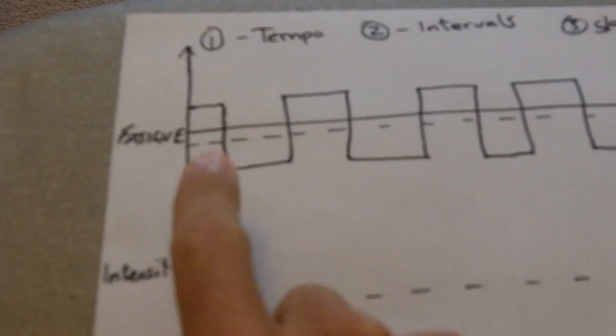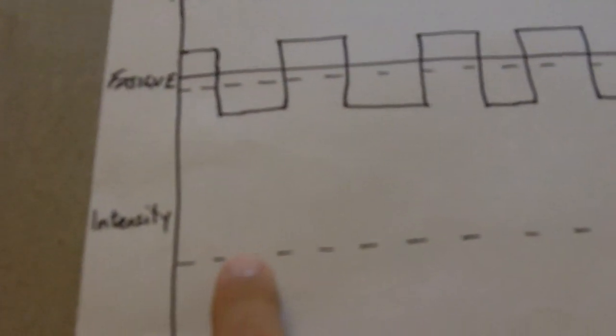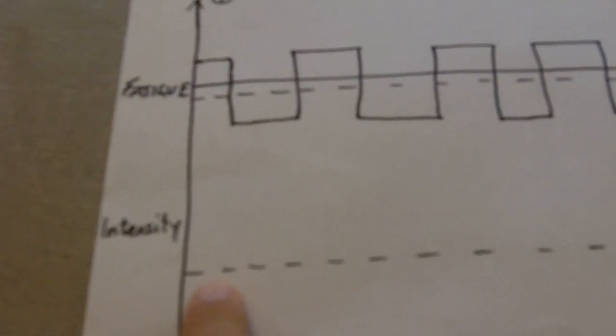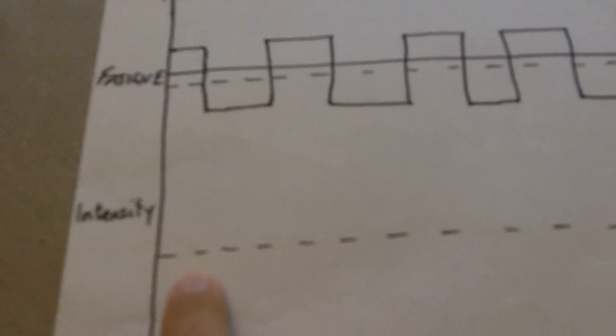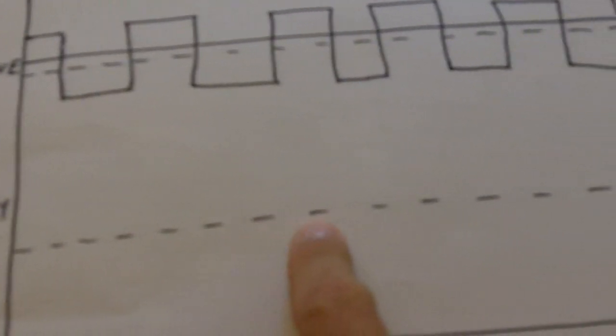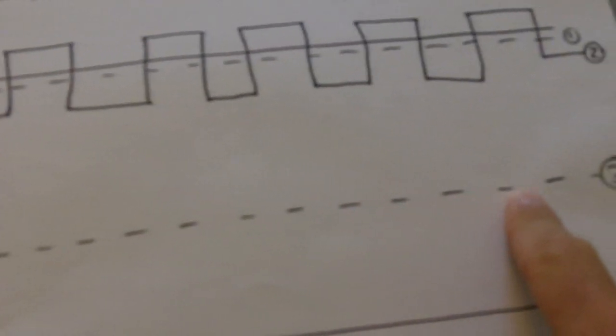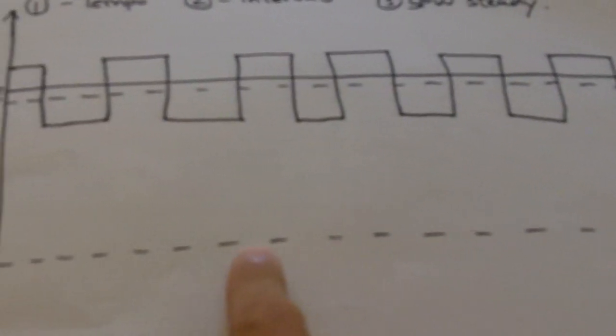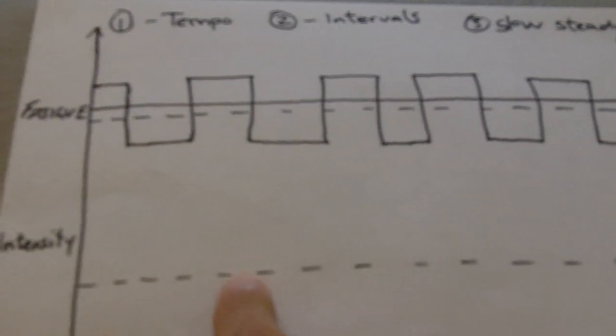Now for most people when they're out jogging themselves, they'll keep it fairly comfortable and they'll just be down here in terms of intensity, they'll be down here at this kind of dashed line. Just working at one continuous pace which can be a wee bit boring and doesn't really get much improvement.